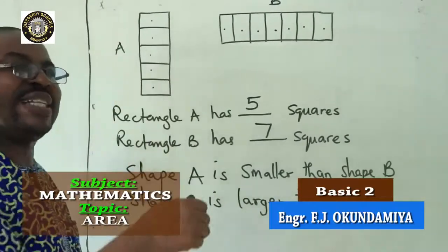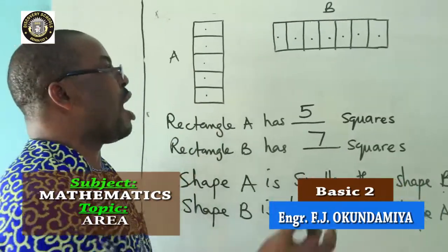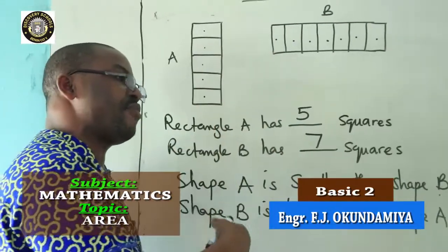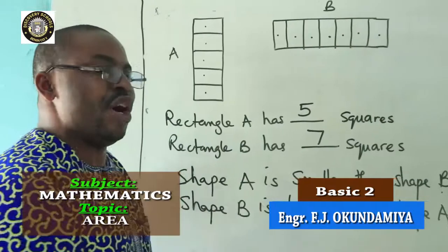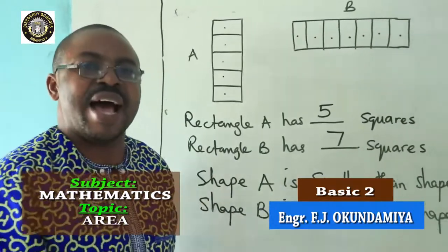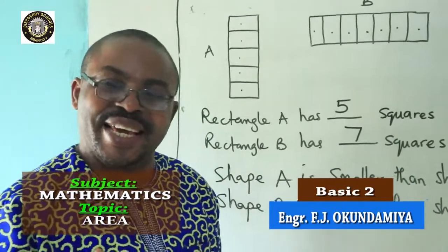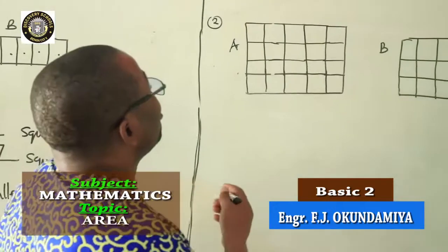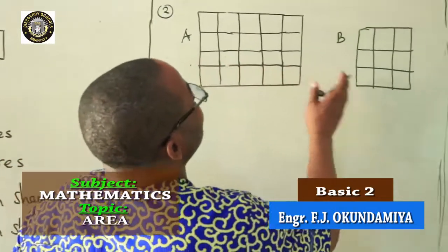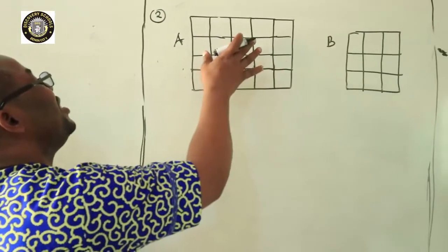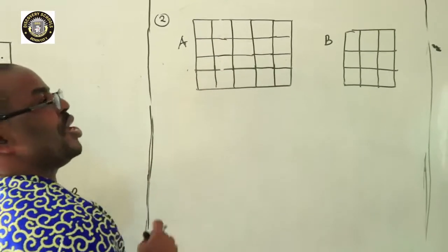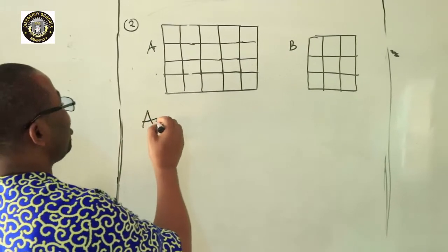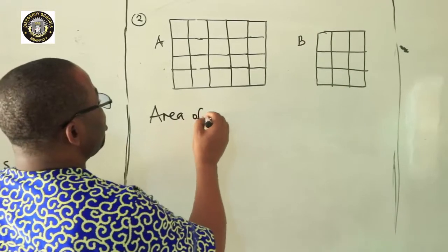It's because shape B has more squares than shape A. So we can get the area of a shape by counting the number of boxes inside that shape. And also we can compare shape A from shape B by knowing the one that is bigger in area and the one that is smaller in area. Example 2. We have shape A and shape B. I can ask you what is the area of shape A? To get the area of shape A, area of shape A.